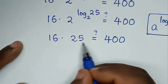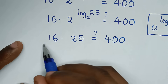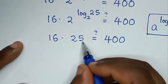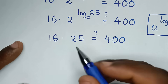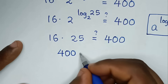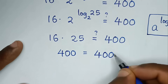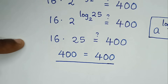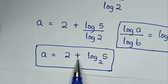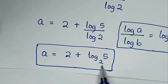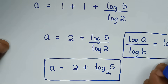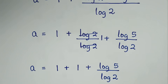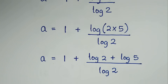From here, 16 times 25: 4 times 25 is 100, then times 4 is 400. So 400 is equal to 400. Left side and right side are equal, so it is true. The value of a is 2 plus log of 5 base 2, which is the simplest answer. Thank you, don't forget to subscribe to my channel and see you in the next video, bye bye.